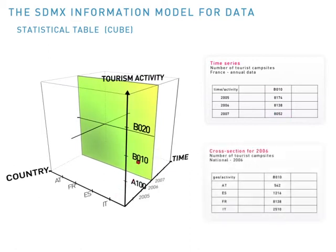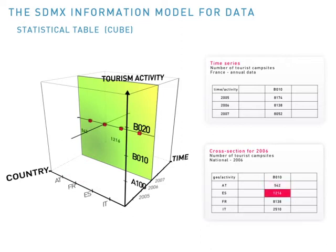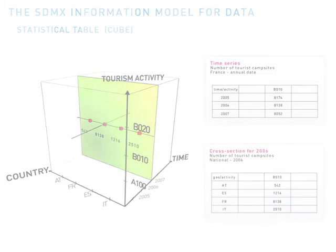The values are the observations and correspond to the number of tourist campsites for France over the given time period. Now, if we fix the time, in this case the year 2006, we obtain one cross-section with a value for each country. The values are the observations and correspond to the number of tourist campsites for 2006 over the respective countries.